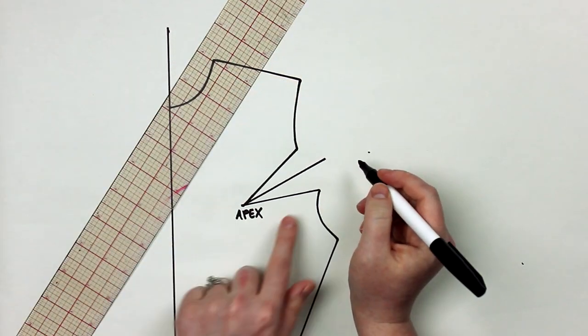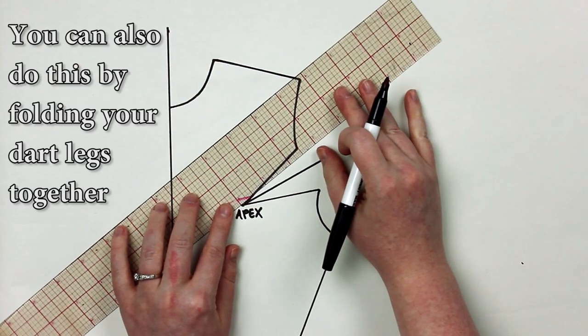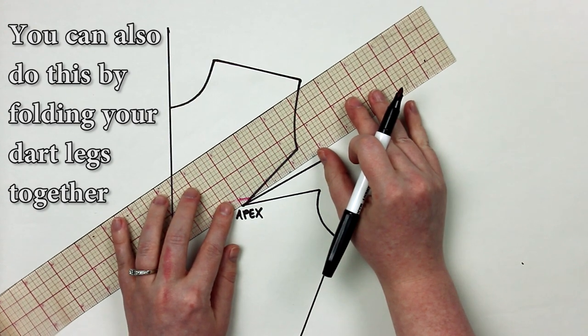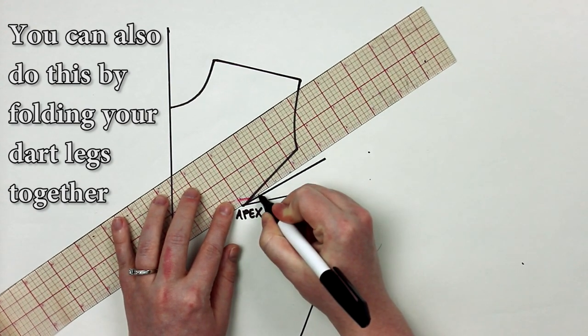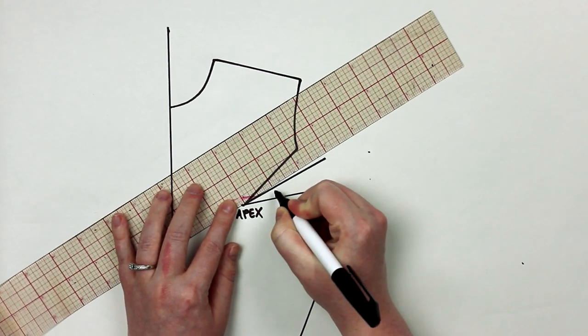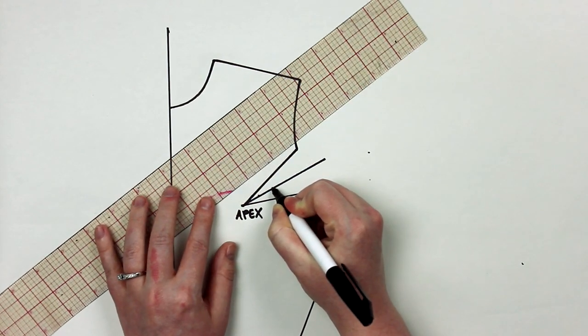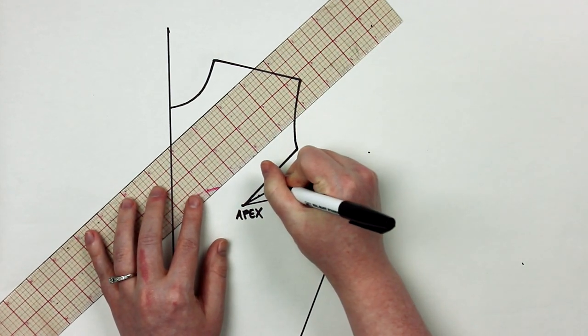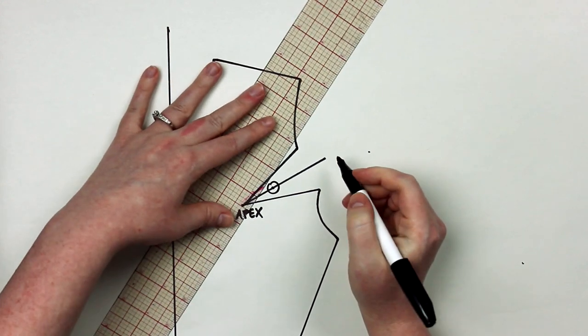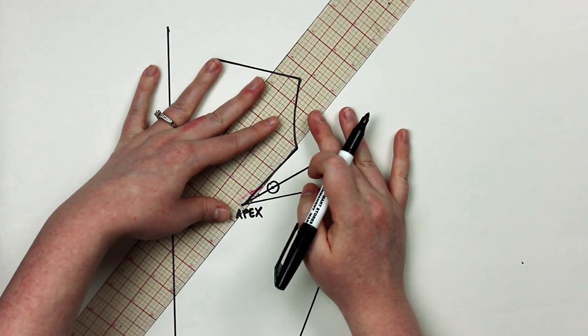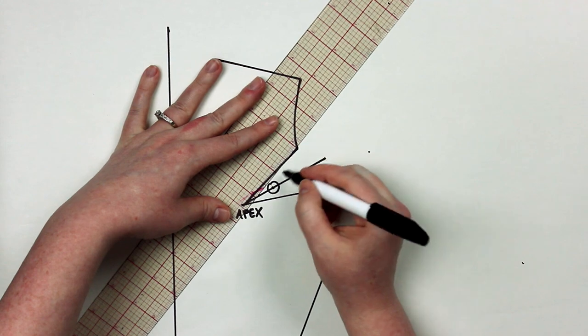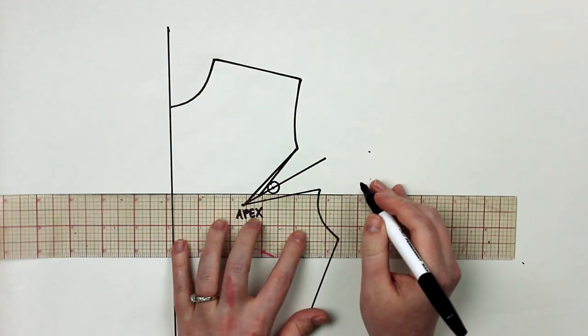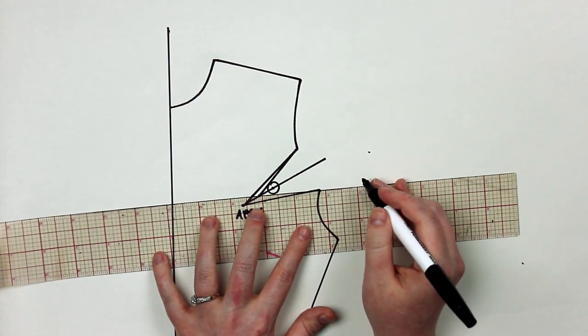Once everything is transferred over to your fresh sheet of paper, you can find the center mark of your dart and draw a straight line right down the center. Following that line, I like to shorten my darts about five-eighths of an inch and then do a half inch from that point for the punch hole. The five-eighths of an inch is just kind of standard, but depending on the style and how large your bust is, you might decide to shorten the dart even more.